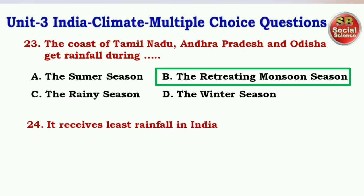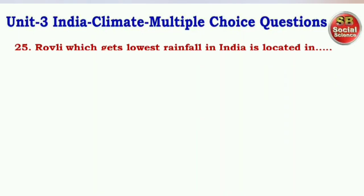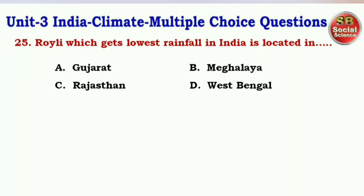Next question: It receives the least rainfall in India — options are Ruili, Ganganagar, Drass, Mawsynram. The right answer is option A — Ruili. Next question: Ruili, which gets the lowest rainfall in India, is located in — options are Gujarat, Meghalaya, Rajasthan, West Bengal. The right answer is option C — Rajasthan.